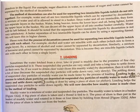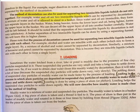The method of decantation is also used for separating two immiscible liquids. Immiscible means the two liquids do not mix. Water and oil are two immiscible liquids. Water, being heavier, forms the lower layer and oil, being lighter, forms the upper layer.